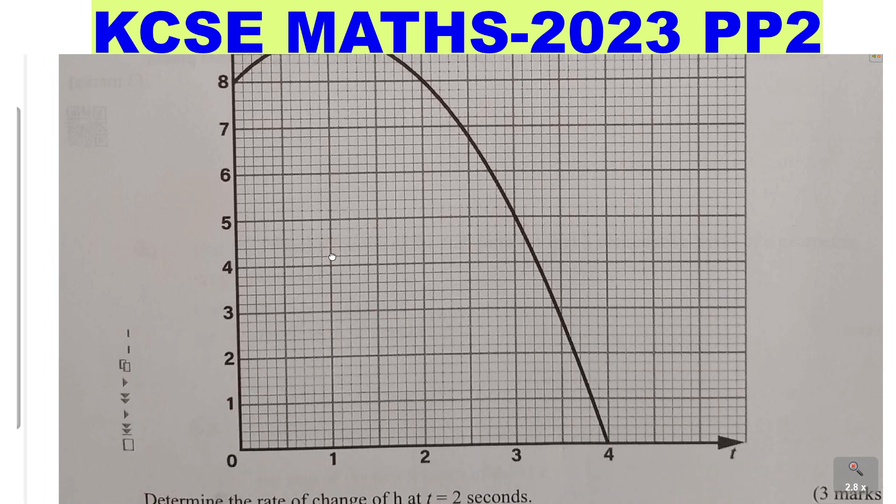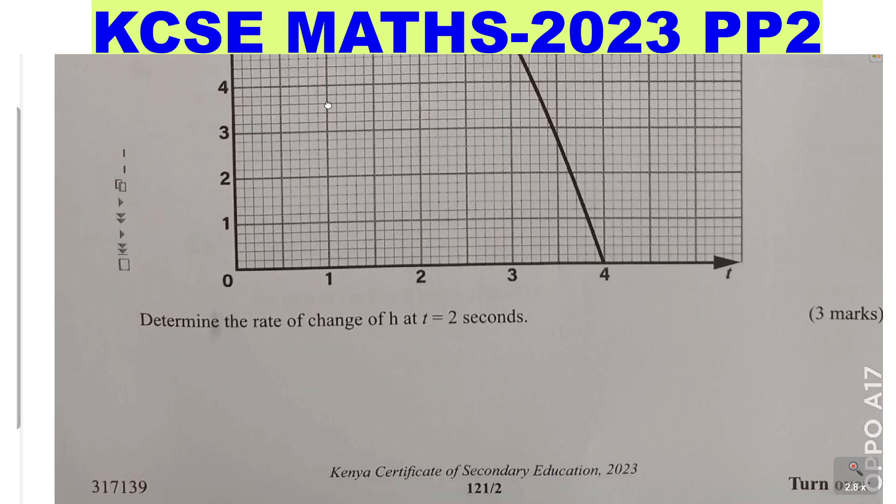So that is the graph as you can see. Move down. Determine the rate of change of h at t equals 2. The rate of change at t equals 2. So what do you need to do?